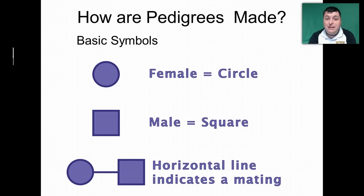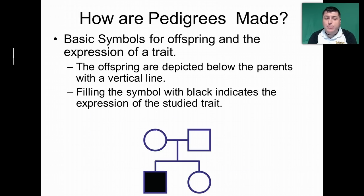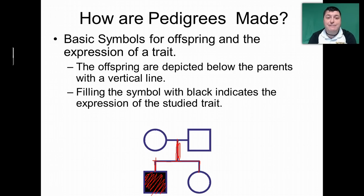Pedigrees are made in a very straightforward way. Females are represented by a circle, and males are represented by a square. A horizontal line indicates a mating event — a marriage. The offspring are depicted by a vertical line being drawn from the marriage line, and then siblings are connected. If you happen to carry the trait of interest, you will be shaded in — so it's a shaded symbol if you have the trait of interest.